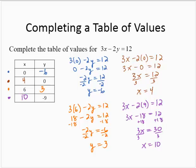So we've completed this table of values. Now, if we think about it, those are four ordered pairs. 0, negative 6 is a solution of the equation. 4, 0 is a solution of the equation. 6, 3 is a solution of the equation. And 10, negative 9 is a solution of the equation.